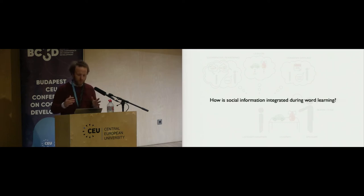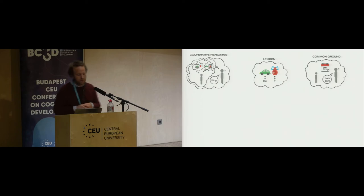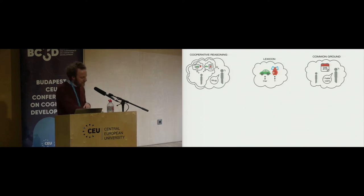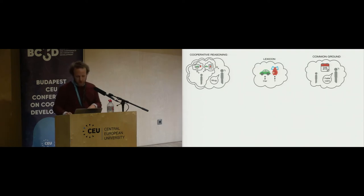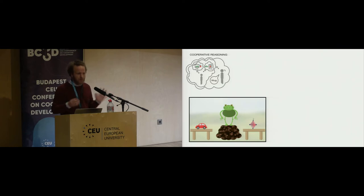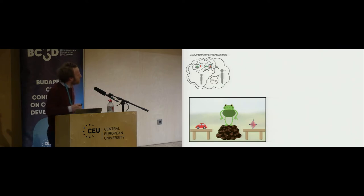We started by thinking about an experimental setup that allows us to manipulate these different information sources within a common experimental framework. We identified these different information sources and implemented them in different tasks. For cooperative reasoning, we looked at a mutual exclusivity inference. I know there are different ways of conceptualizing mutual exclusivity aside from a pragmatic inference, but for the sake of this talk I will treat it as a pragmatic inference.